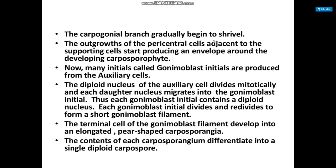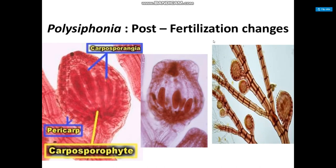Many initials called gonimoblast initials are produced from the auxiliary cell. The diploid nucleus of the auxiliary cell divides mitotically, and each daughter nucleus migrates into a gonimoblast initial, so each gonimoblast initial contains a diploid nucleus. Each gonimoblast initial divides and re-divides to form a short gonimoblast filament. The terminal cell of the gonimoblast filament develops into an elongated pear-shaped carposporangium.